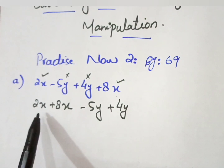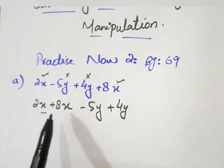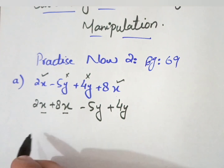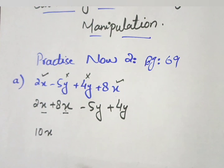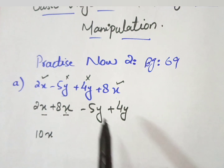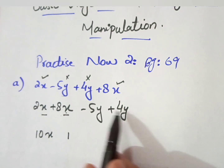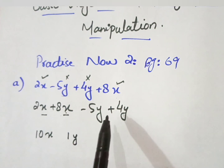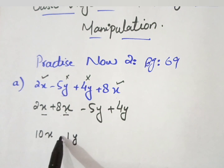Now collect all the terms with the same variable. You can see that here we have the coefficient 2 with variable x and also the coefficient 8 with variable x, so we solve these two terms: 8 plus 2 becomes 10x. Then for the y terms: minus 5 plus 4 — opposite signs mean subtraction — 5 minus 4 equals 1, and the greater term 5 has the minus sign, so we write minus 1y.